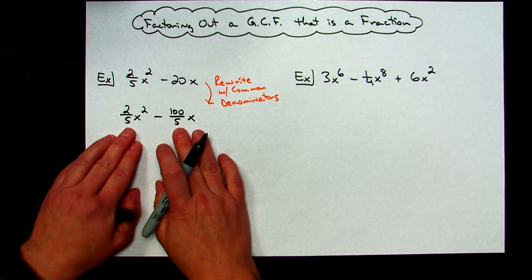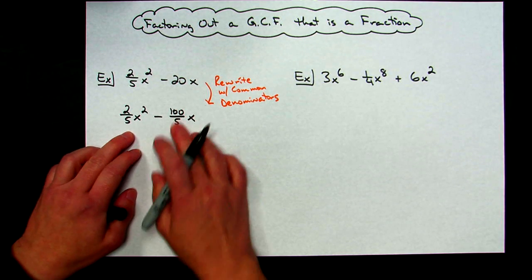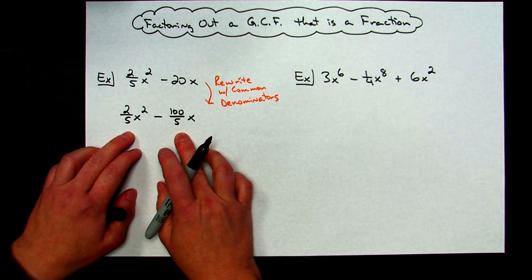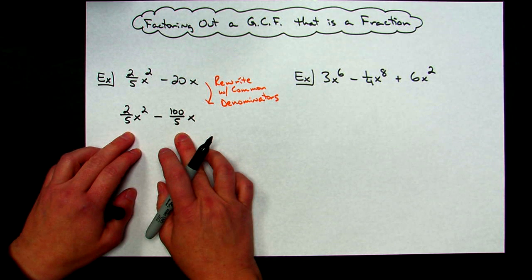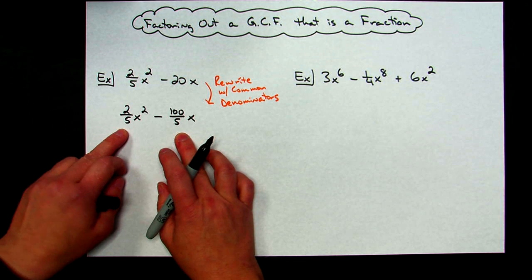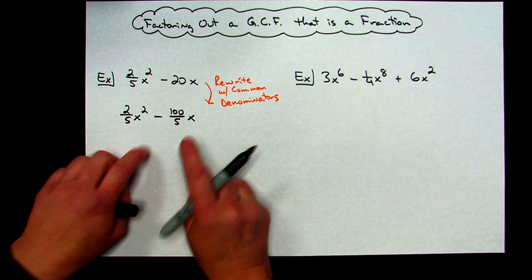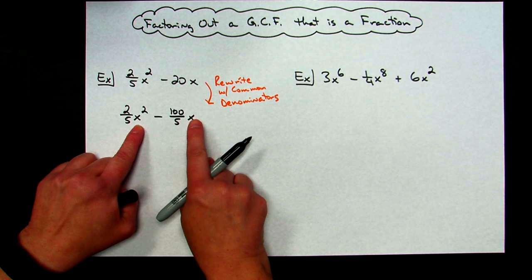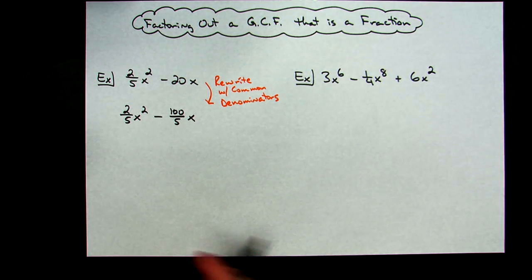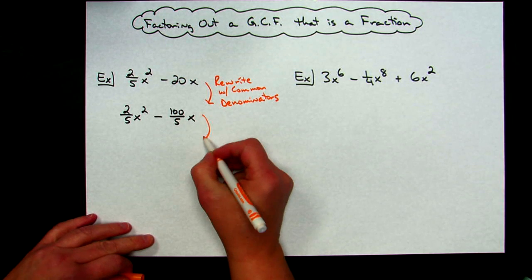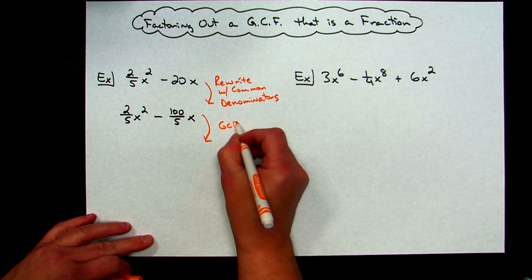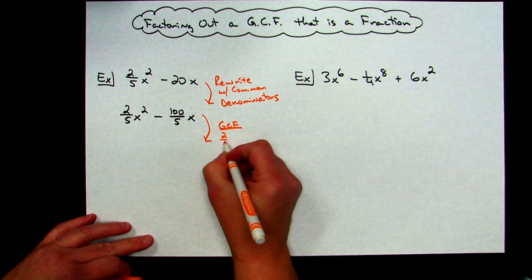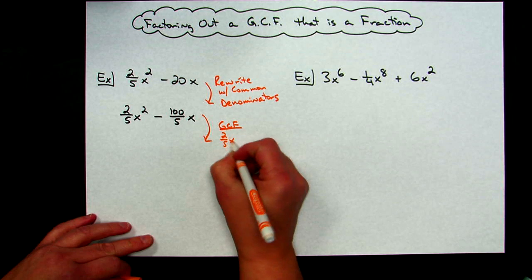Now I can look at these two fractions. I've got 2/5 here and 100/5 here. So I can figure out what the biggest GCF — greatest common factor — is that I can take out. Well, 2/5 is going to be the biggest thing I can take out. I also need to look at the variables: I've got an x² and an x, so I can take out an x as well. So my GCF in this case is going to be 2/5 x.